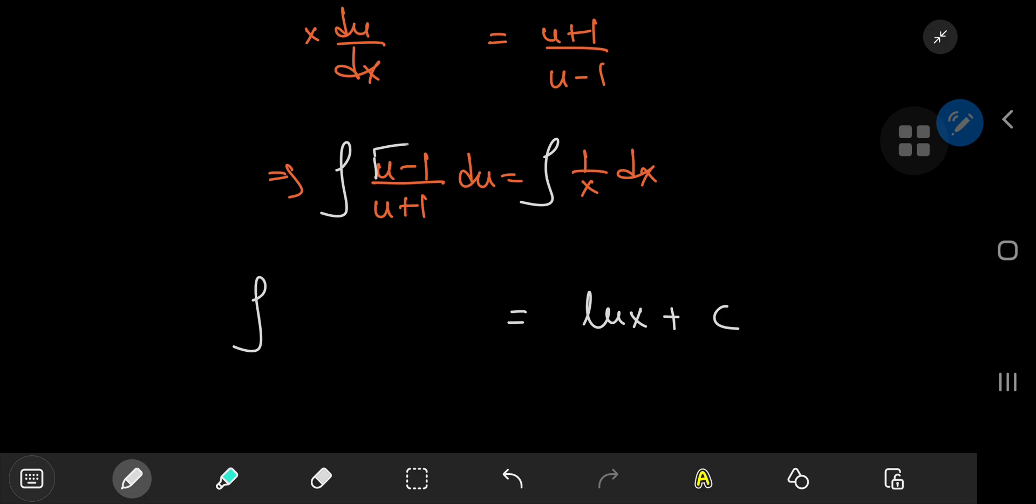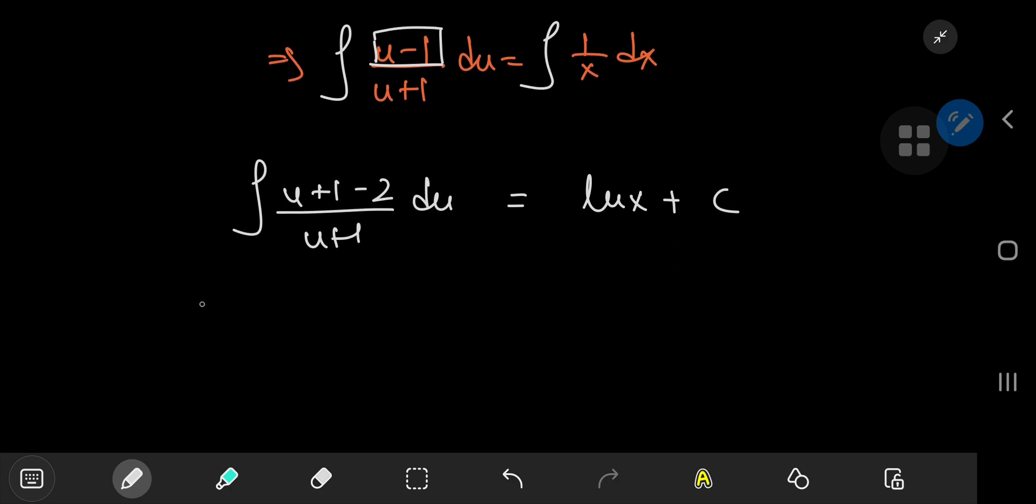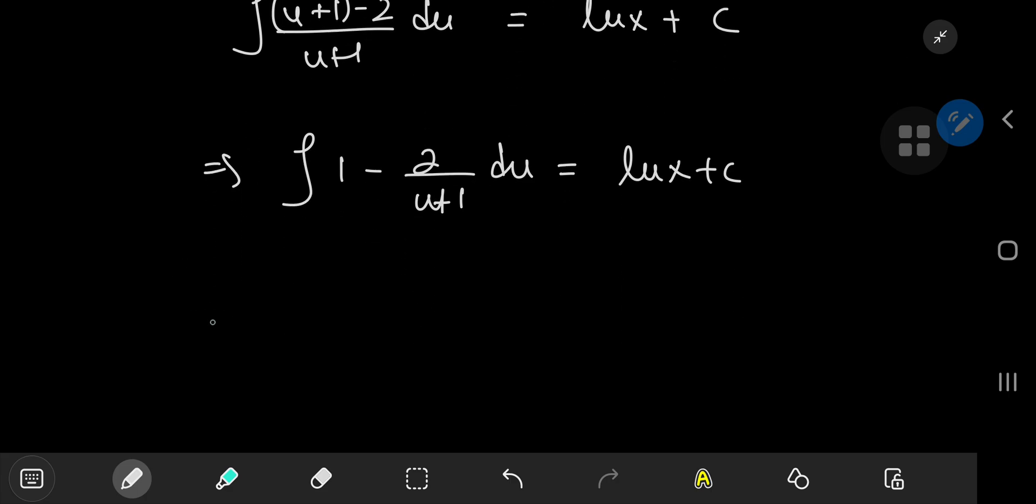And on the left hand side, you can perform some trickery with the numerator here by writing it as u plus one minus two divided by u plus one. And on separating the terms in the numerator, we get the integral of one minus two divided by u plus one du being equal to log x plus c. So on the left hand side, we have quite trivially u minus twice the logarithm of u plus one being equal to the natural logarithm of x plus c.